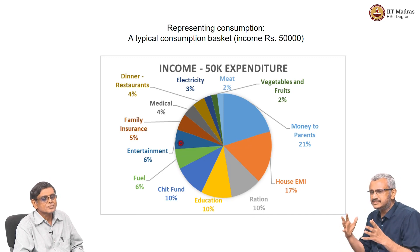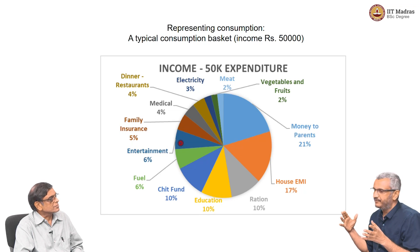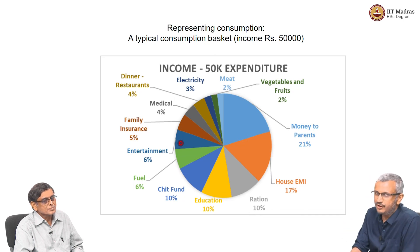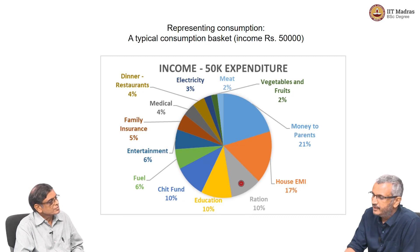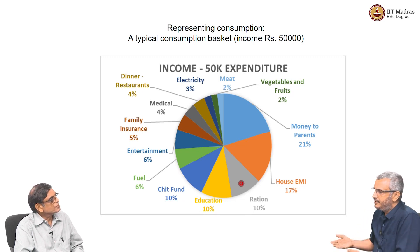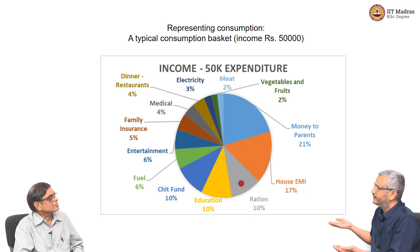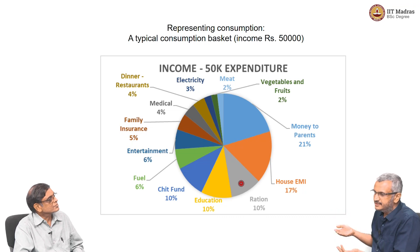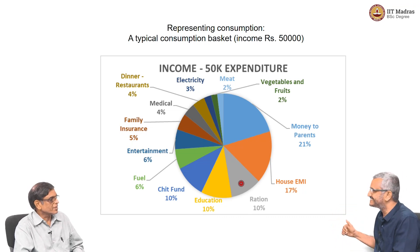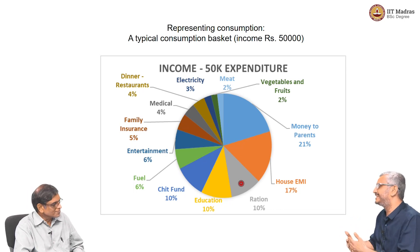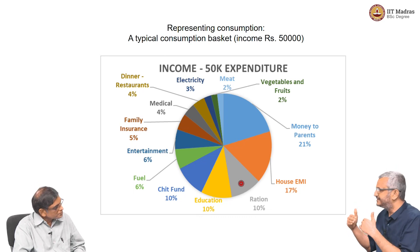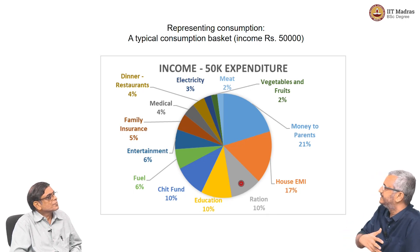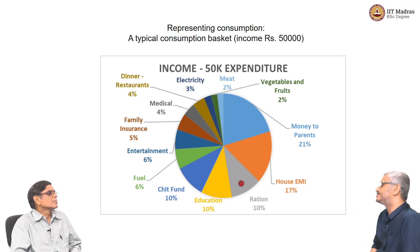Once we have large-scale data, we can draw many inferences. For example, one straight inference is that the percentage of money spent on food is not proportional to the increase in income. If there is a 10% increase in income, the increase in money spent on food is not 10% — it is slightly less. Because you reach a saturation: satisfaction and utility from food reach a plateau. That is why large-scale surveys give very interesting insights into consumption patterns in an economy.